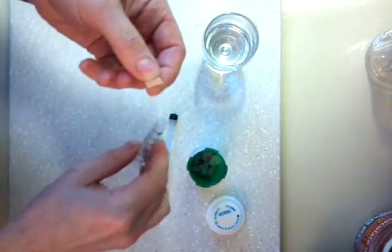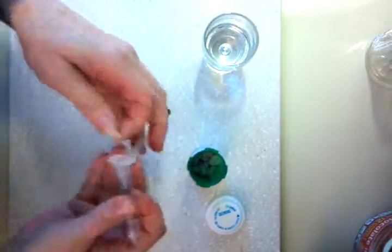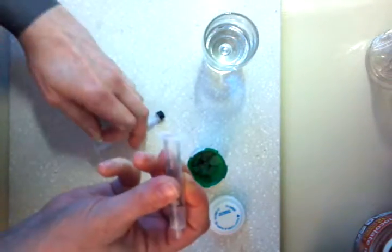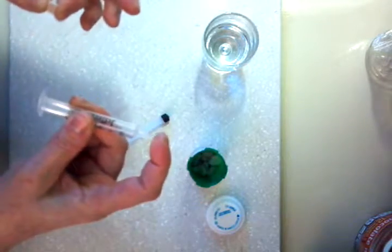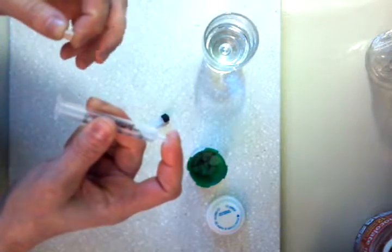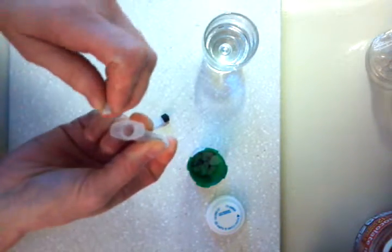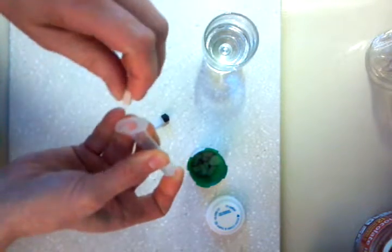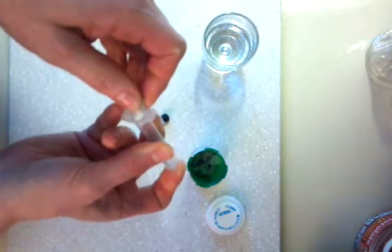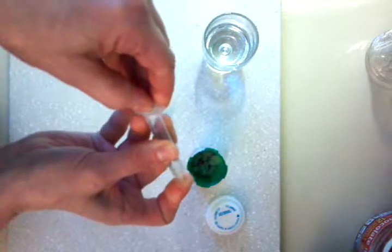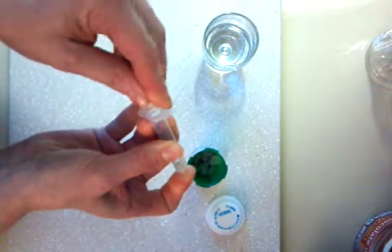And then the trick is, what you want to do is take the plunger completely out of the syringe. I've already taken the plunger out of the syringe. And then you want to put your finger over the hole so that nothing falls out the bottom. And then tilt it up. And then these break off quite easily. So you're just going to try to break them off into the syringe, like so.